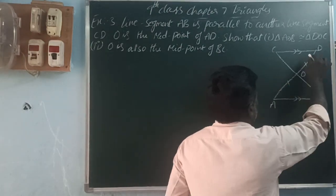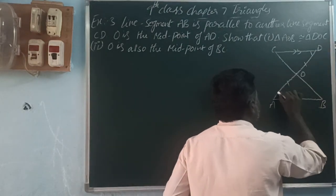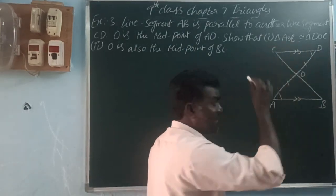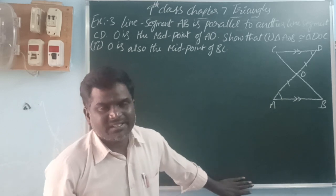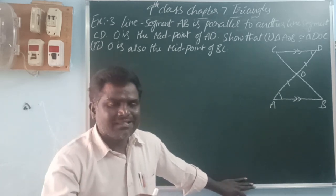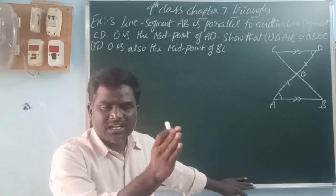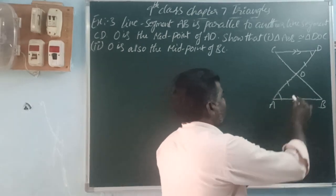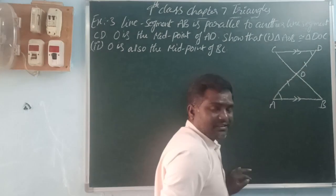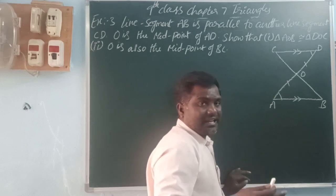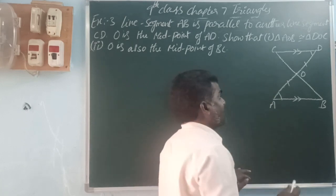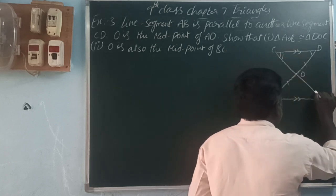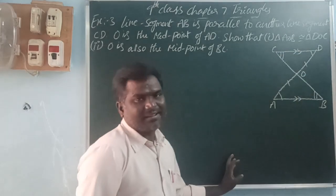So here, these two lines are parallel and this is a transversal line. Then this angle and these angles are equal — these two are alternate interior angles. Alternate interior angles are the angles on either side of a transversal line, and those angles are called alternate interior angles. So here, these two angles are equal.